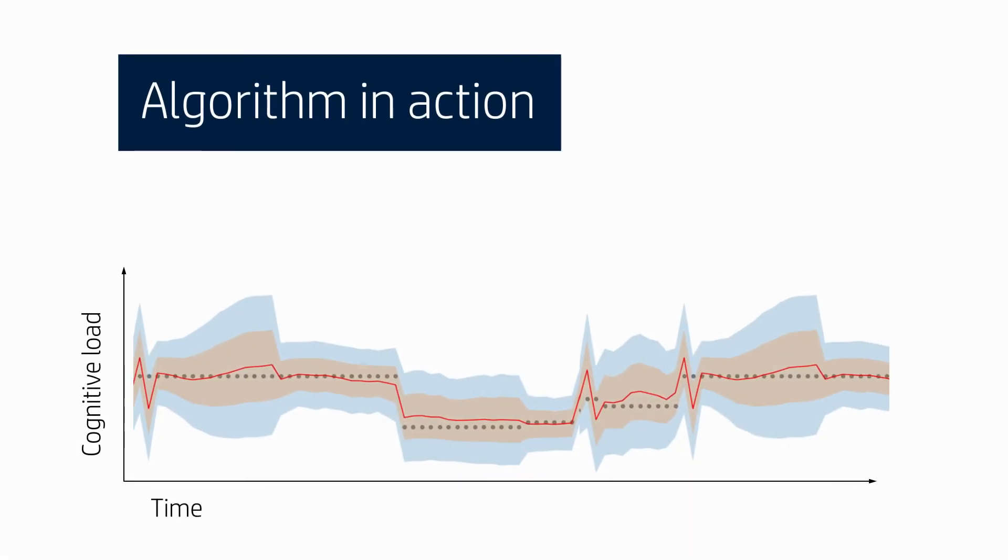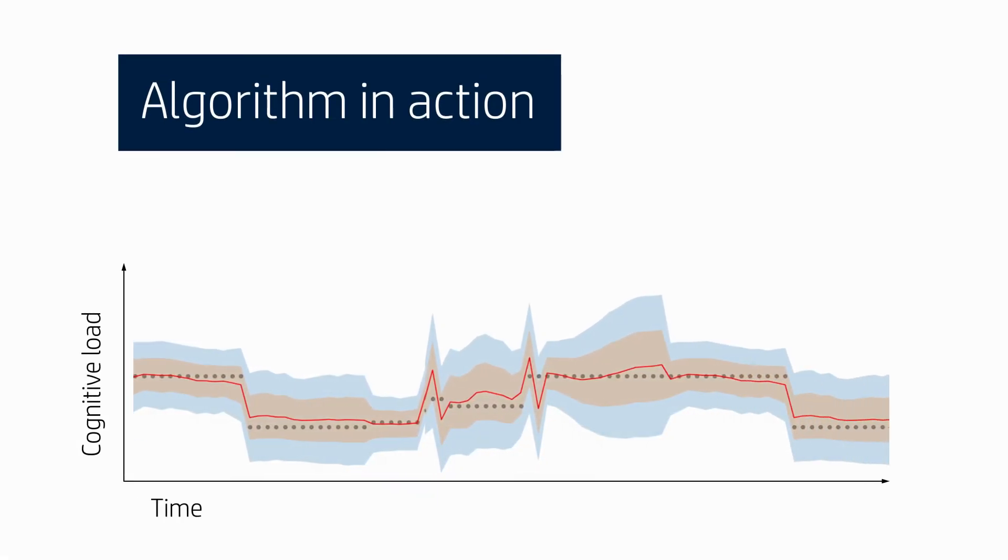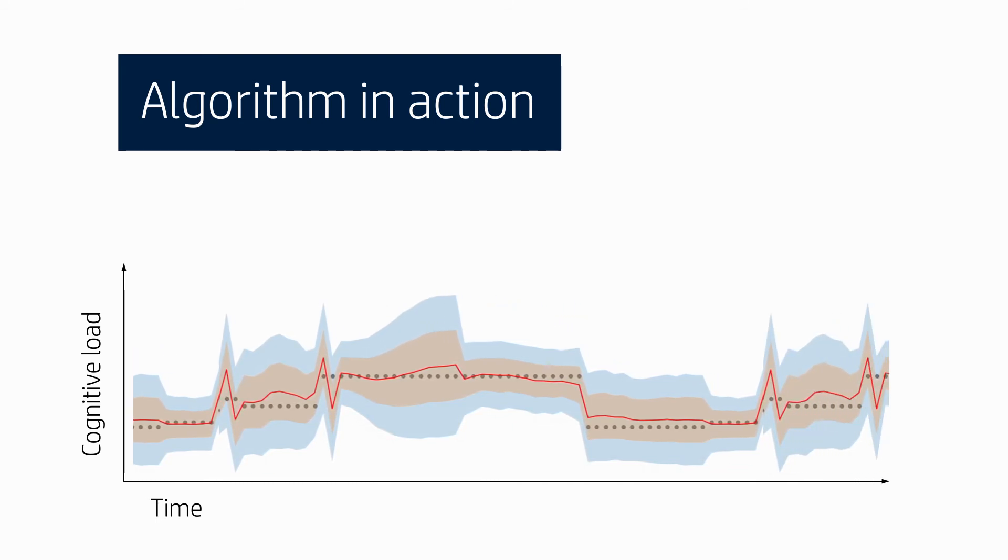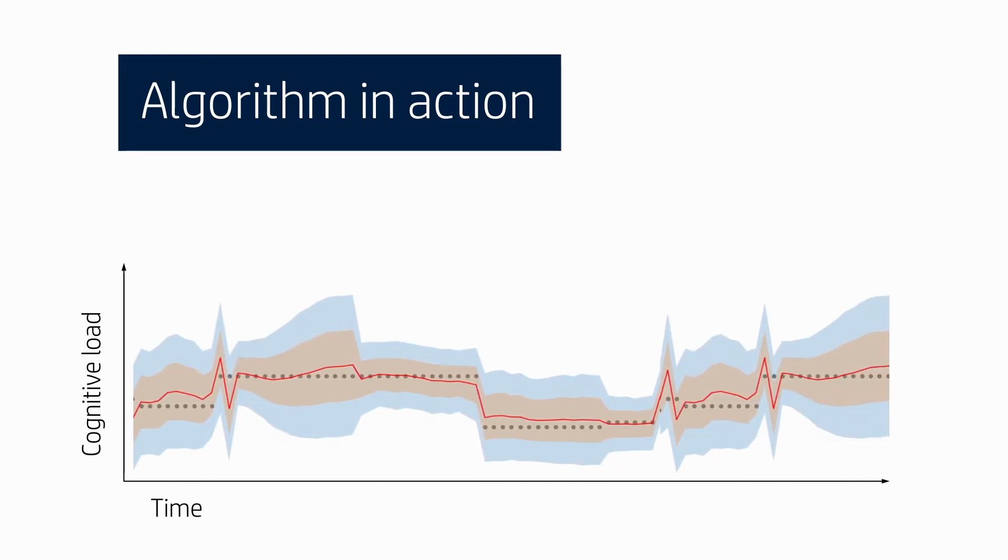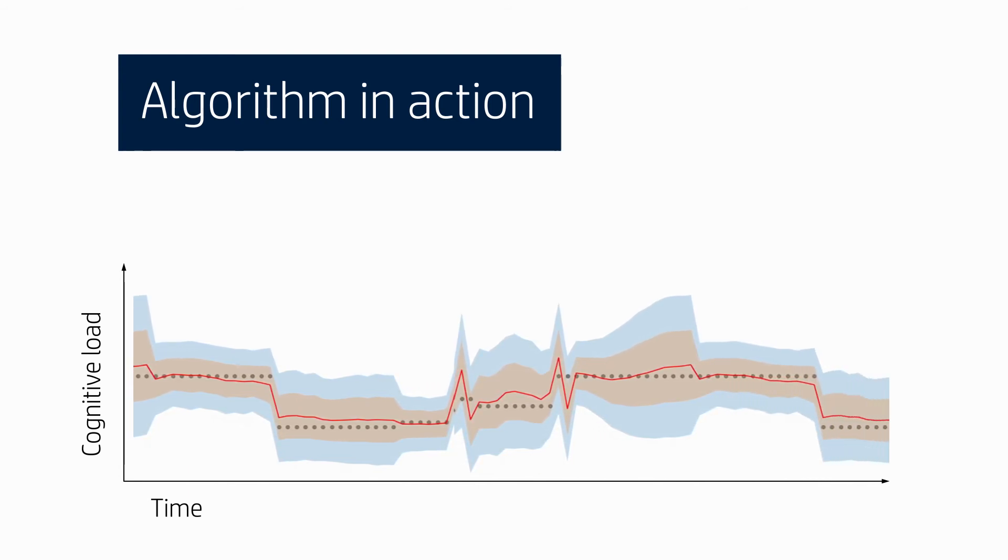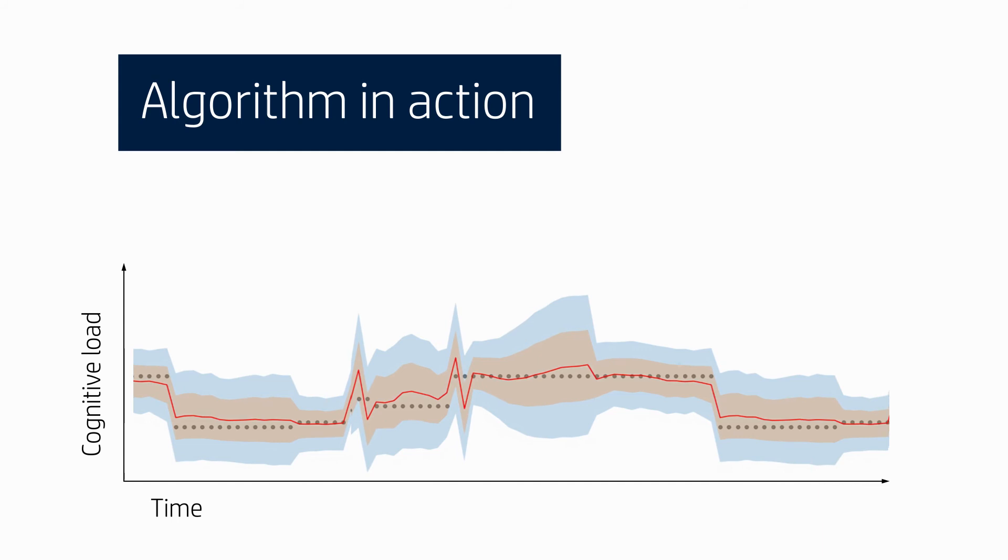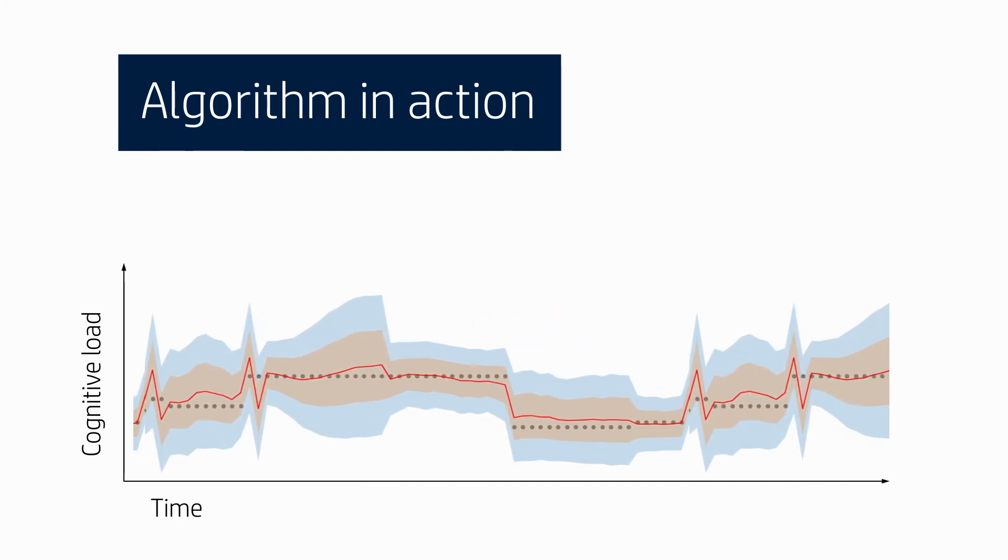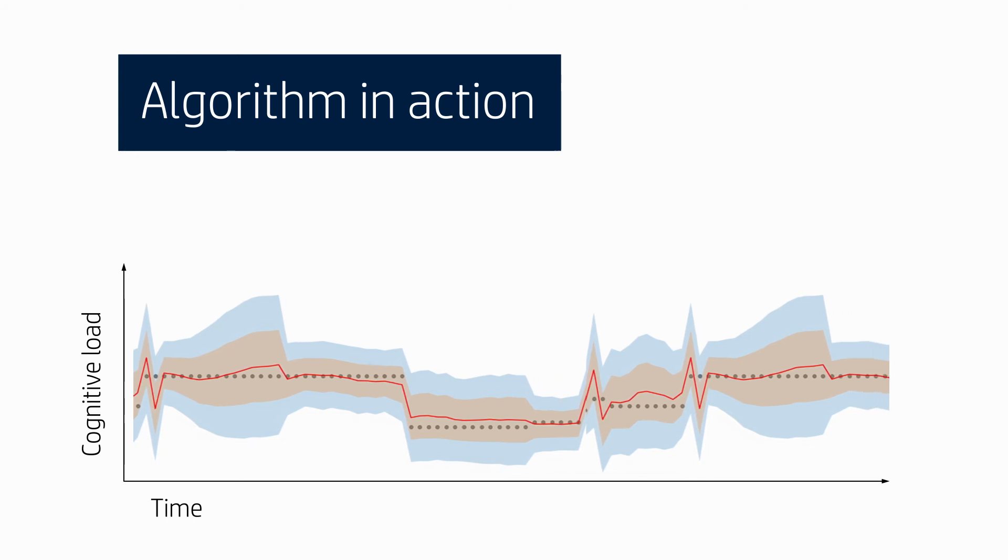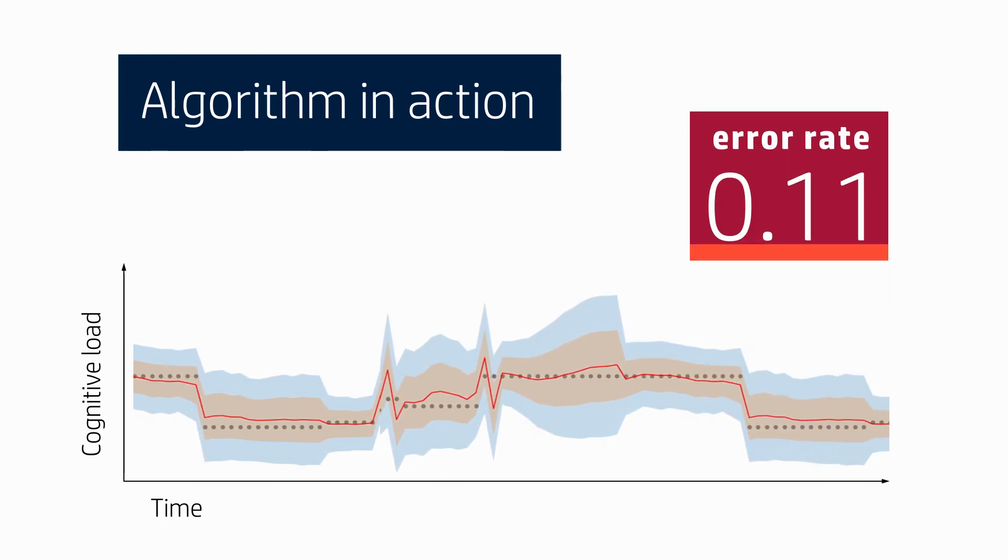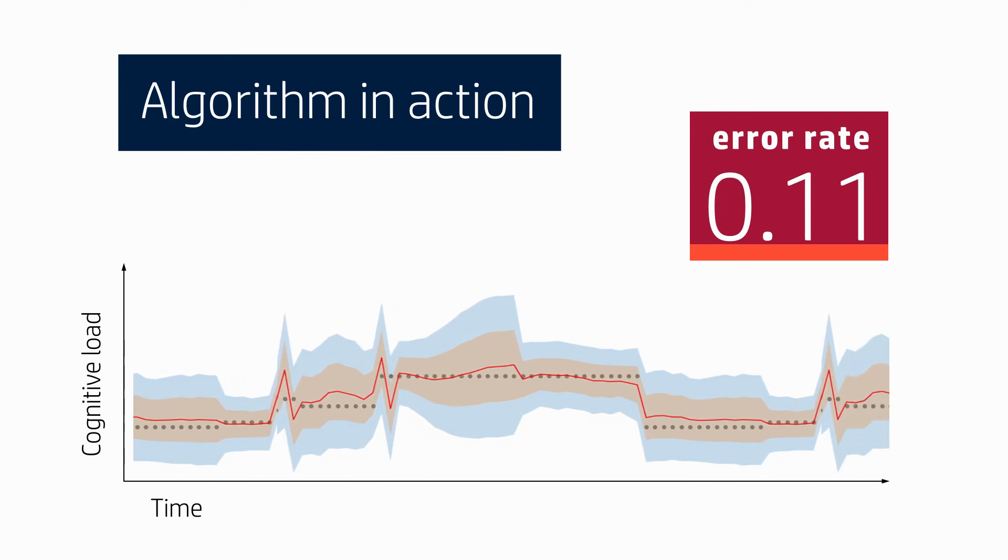Here is the real algorithm in action. The black dots represent the ground truth of the participant's cognitive load in real time. The red line is the algorithm's prediction of the user's cognitive load. The goal is to have as little difference as possible between the ground truth and the prediction. In our case, the average of all the differences between the ground truth and the prediction, called mean absolute error, was 0.11. This is a well-performing algorithm because the error rate is close to zero.